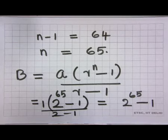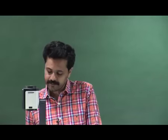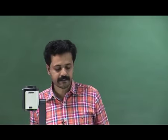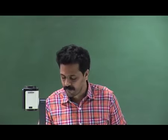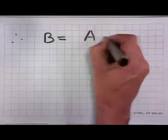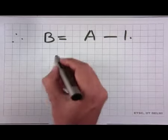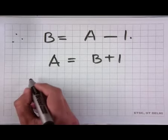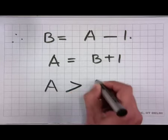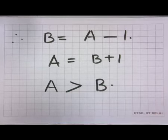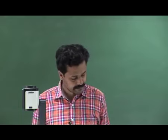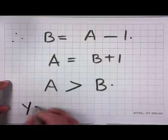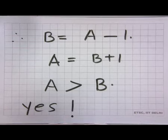Therefore, we obtain B to be 2 power 65 minus 1. Recall that 2 power 65 is the value of A. Therefore, B is A minus 1, which says that A equals B plus 1. Consequently, A is greater than B. Note that A and B are positive. Thus, the answer to the question is yes — A is greater than B.